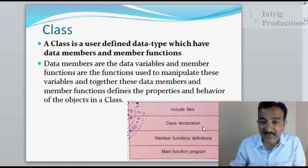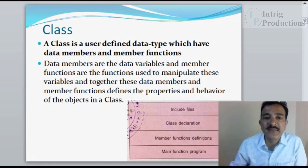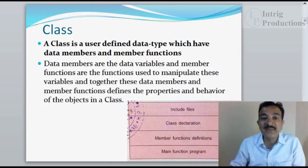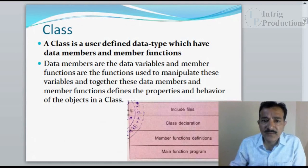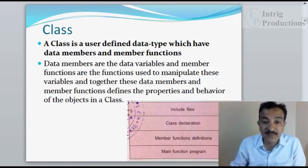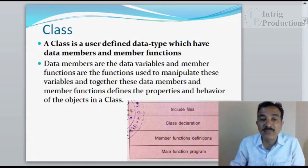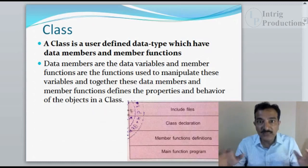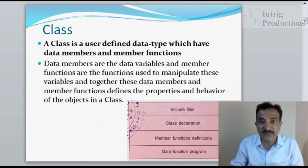The next section is the class declaration. A class is a user-defined data type which has data members and member functions. The data members are the data variables, and the member functions are the functions used to manage those data variables. Together, the data members and member functions define the properties and behavior of the object in a class.